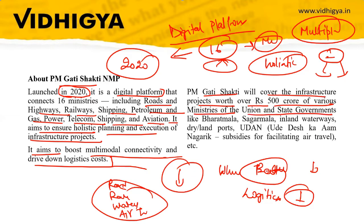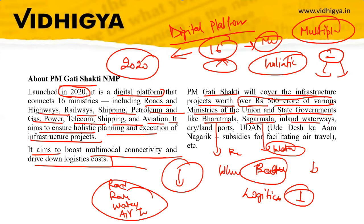Projects like Bharatmala — related to roads and highways — and Sagarmala — related to ports and inland waterways — can come under this plan. UDAN (Ude Desh Ka Aam Nagrik) is also included. There are multiple such projects that can come under this plan.